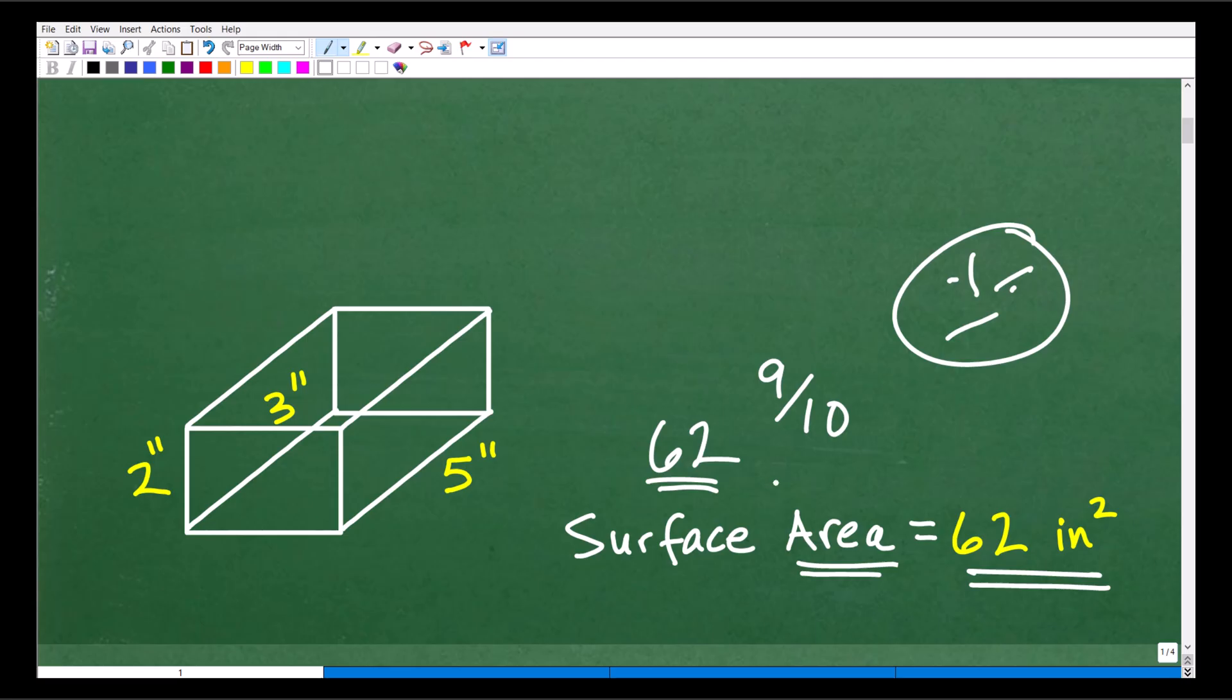So most math teachers and science teachers, when you're doing this, if you don't put those units of measure in, they will dock you some points. But anyways, if you've got 62 inches squared, let me go ahead and give you a nice little happy face and A+, and a 100% nice job, okay?